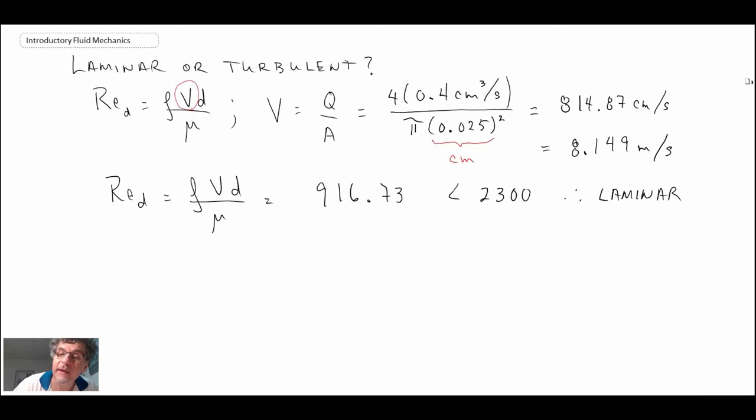With that, we can then determine what the pressure drop will be in the section of pipe. To get the pressure drop, we need to obtain the friction factor. The friction factor for laminar flow is f = 64/Re_D, which gives us 0.0698. Alternatively, you can also get that from the Moody diagram.